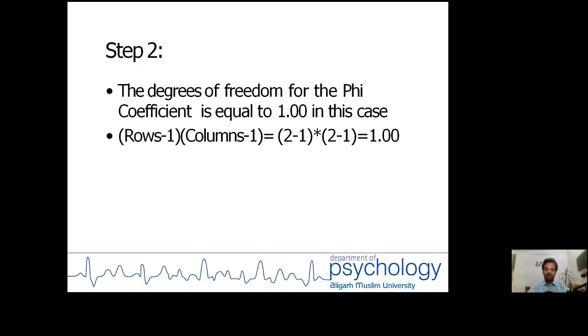Step two: The degrees of freedom for the phi coefficient is equal to one in our case, and the formula is same as we are having in case of chi-square coefficient: (r-1) into (c-1).